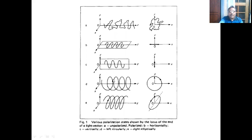If the direction of rotation is anti-clockwise, we call it left circularly polarized light, and if the direction is clockwise, it is right circularly polarized. Similarly, if the amplitudes of both vibrations are not the same, it gives us elliptically polarized light — clockwise is right elliptically polarized, and anti-clockwise is left elliptically polarized.